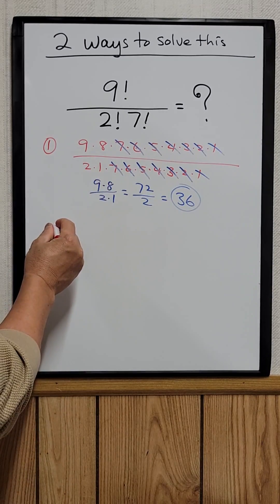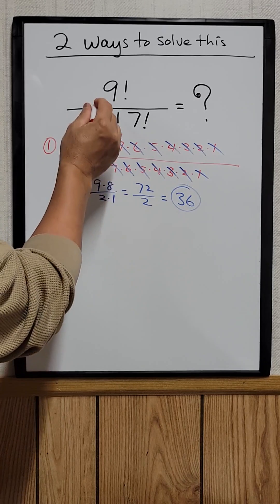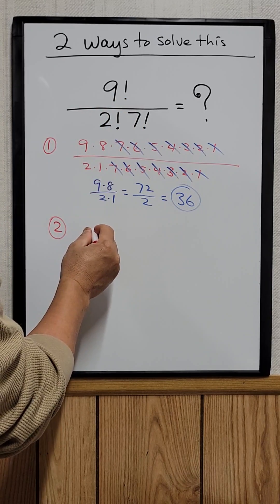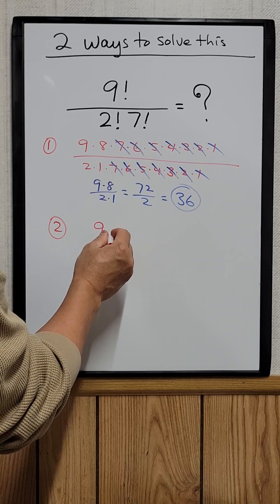The easy way would be to write nine factorial as nine times eight.